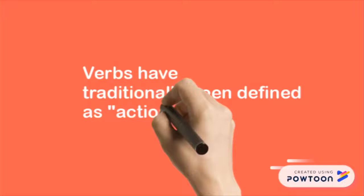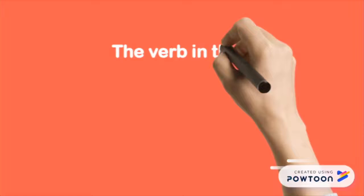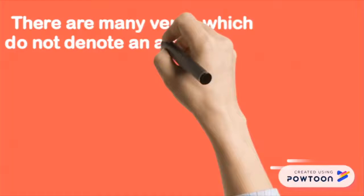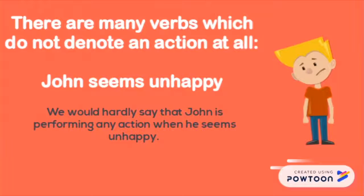Verbs have traditionally been defined as action words or doing words. The verb in the following sentence is 'rides': John rides a bicycle. However, there are many verbs which do not denote an action at all. For example, 'John seems unhappy' — we would hardly say that John is performing any action when he seems unhappy.